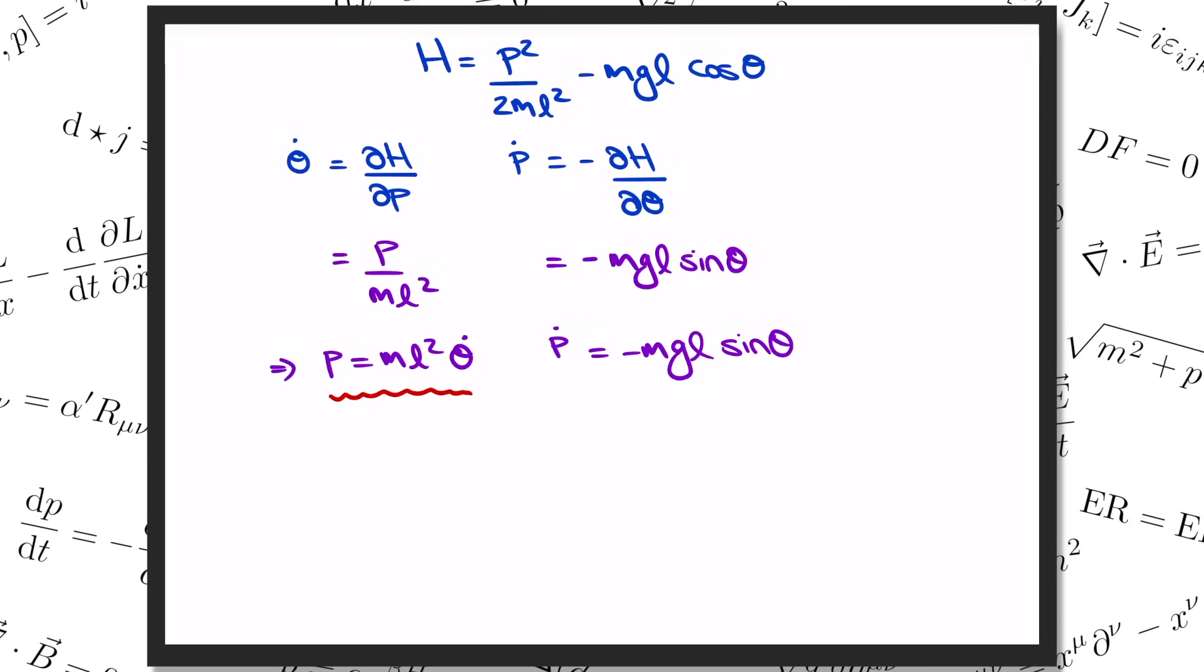This first equation is just the definition of momentum again. If I take its rate of change, it says that p dot equals mL squared theta double dot. Now if I insert that into Hamilton's second equation, we learn that mL squared theta double dot is equal to minus MgL sine theta. Crossing out the common factors, we arrive one more time at our old friend, theta double dot equals minus G over L sine theta.